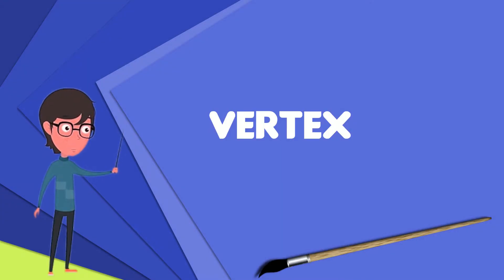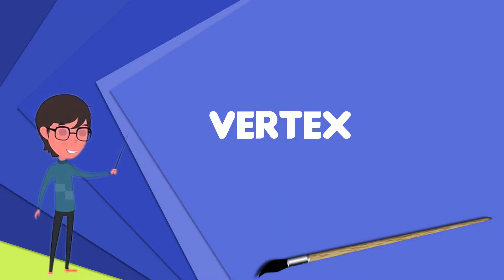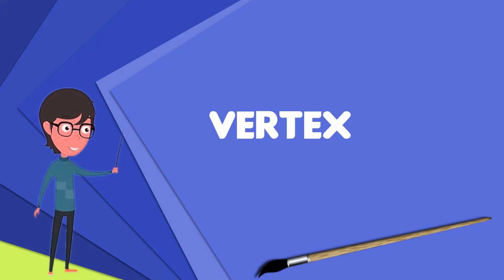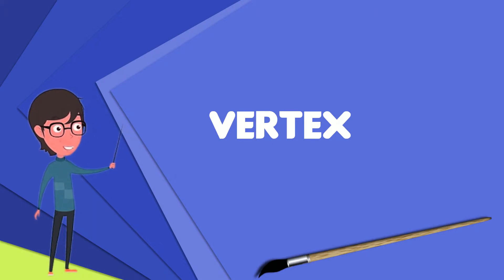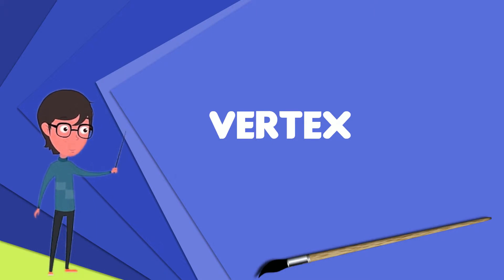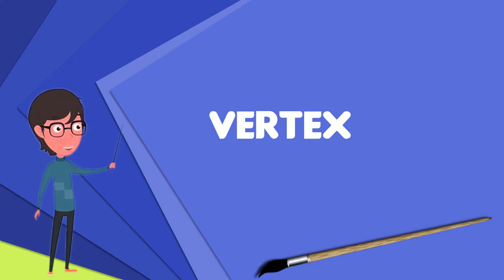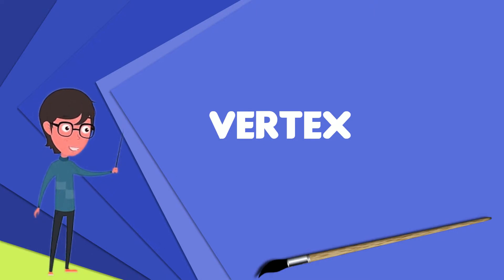In mathematics, and more specifically in graph theory, a vertex or node is the fundamental unit of which graphs are formed. An undirected graph consists of a set of vertices and a set of edges, while a directed graph consists of a set of vertices and a set of arcs.